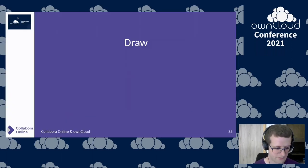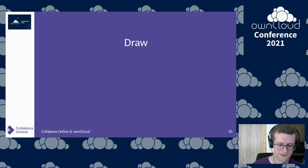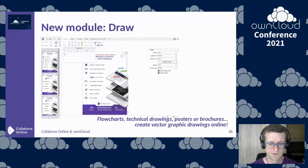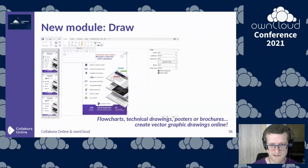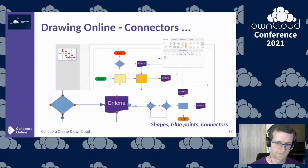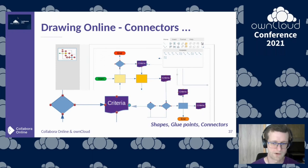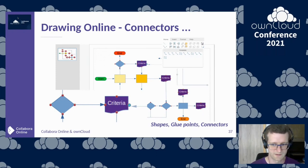Next to the existing Writer, Calc, and Impress modules, a new module compared to last year is the Draw module, which is handy for creating flow charts, technical drawings, posters, or brochures — anywhere vector graphical drawing is a good fit. You could misuse Impress for this, but that's really for slides, not printed documents. We added native client-side support for setting shape properties, interacting with glue points and connectors — so you can have a line shape that connects one shape to another and sticks to a glue point.